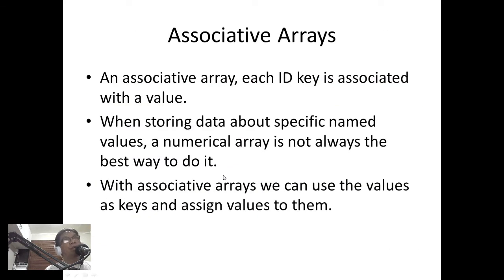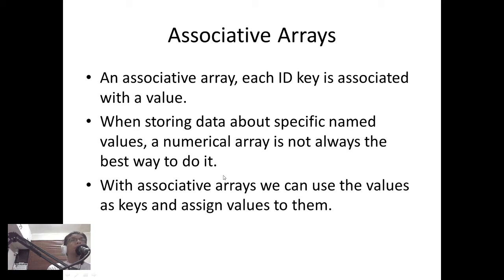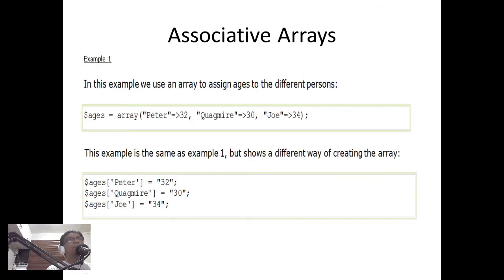We also have what we call associative arrays. An associative array is one where each ID key is associated with a value. When storing data about specific named values, a numerical array is not always the best approach, because sometimes it is easier to remember names rather than numbers. With associative arrays, we can use values as keys and assign values to them.